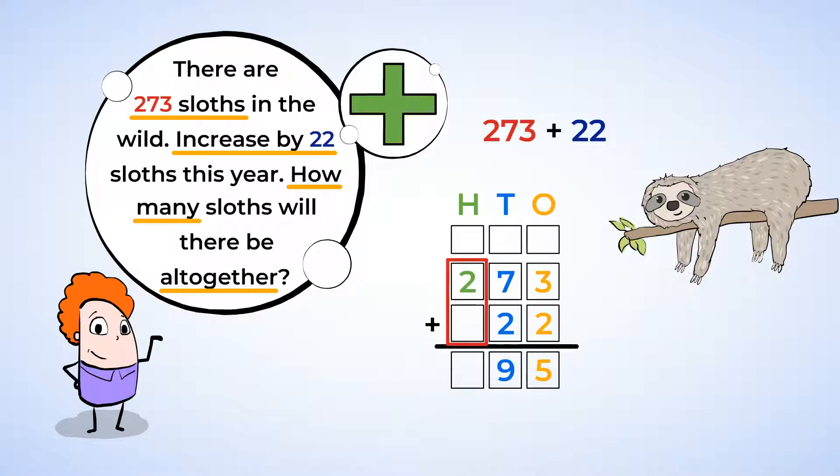Look at the hundreds place. Here, there is only a 2 in the hundreds place. You don't need to add, just put the 2 in the hundreds place of your answer. 273 plus 22 is 295. Scientists are hoping to have 295 sloths in the wild by next year. Great work.